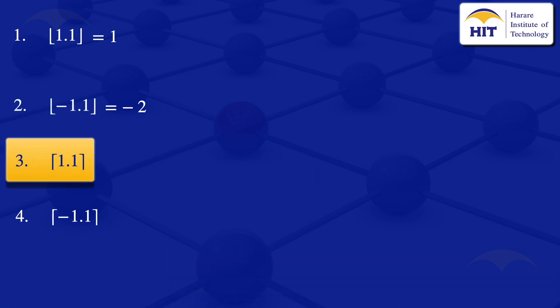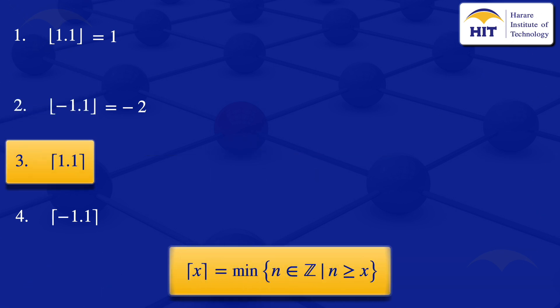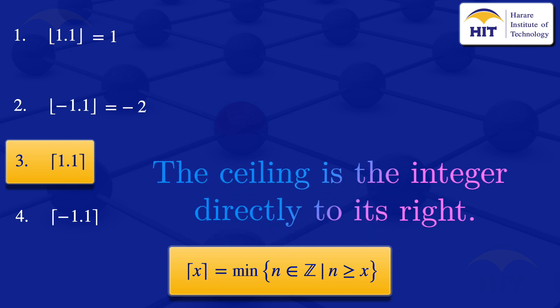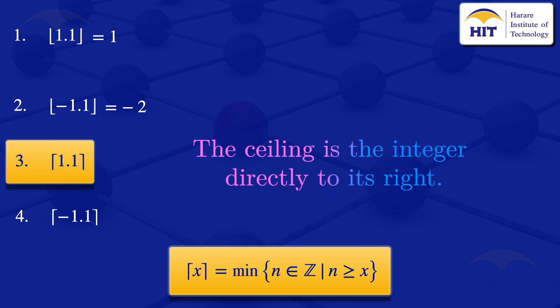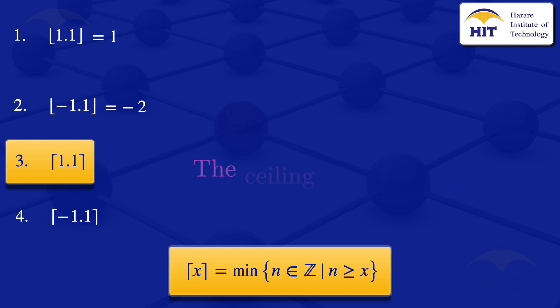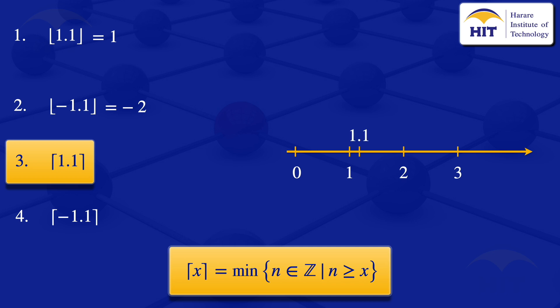I will now move on to the ceiling value of 1.1. By definition, the ceiling of x is the least integer that is not less than x. Simply put, the ceiling is the integer directly to its right. We can visualize this by drawing a number line, starting from 0, 1, 2, and 3. Then we can place 1.1 on the number line.